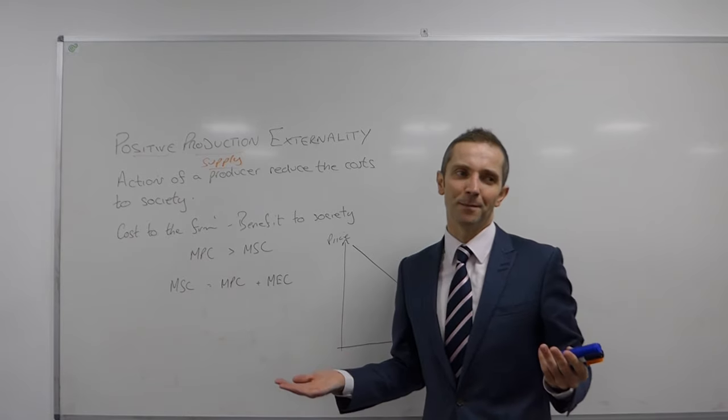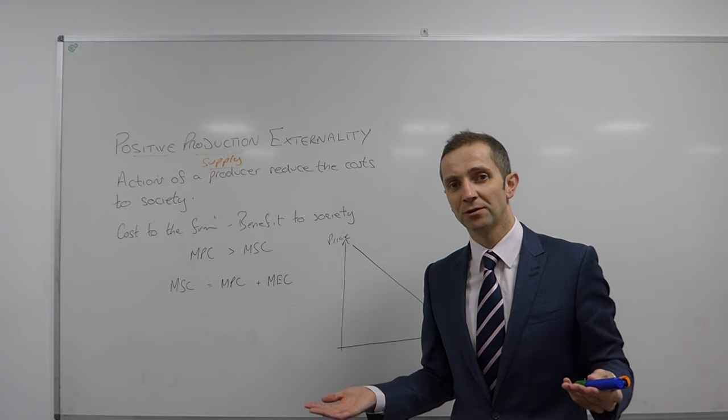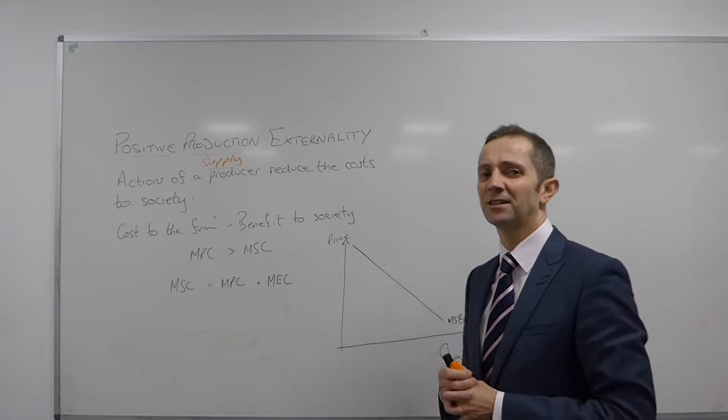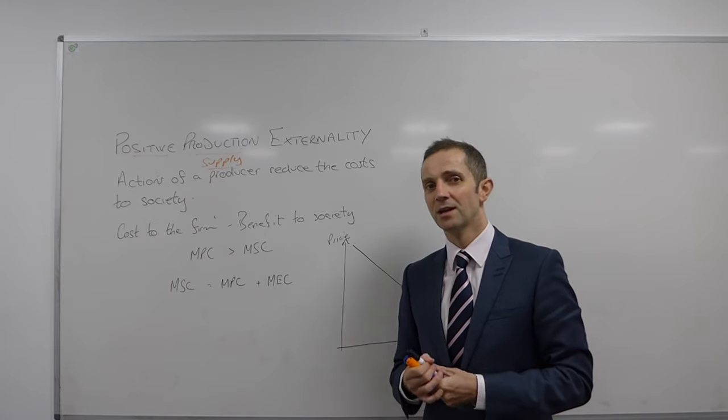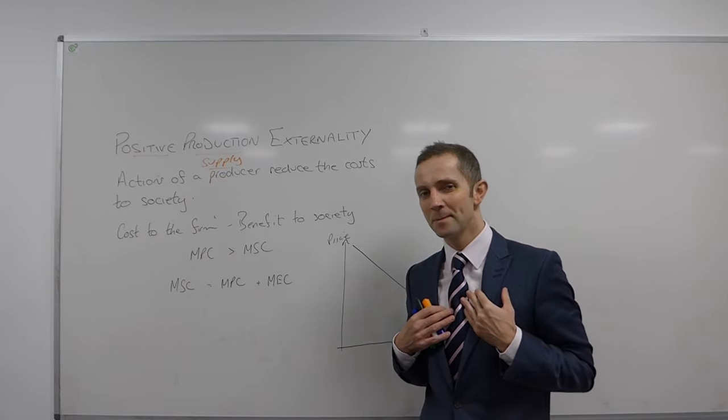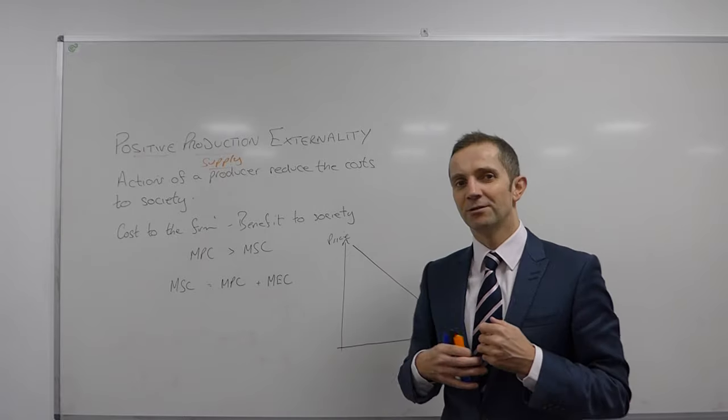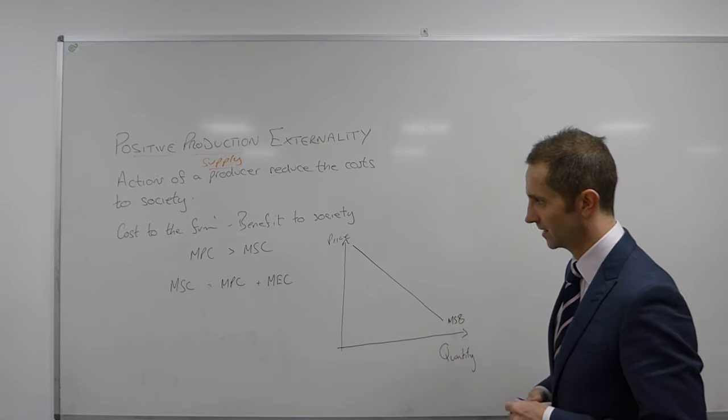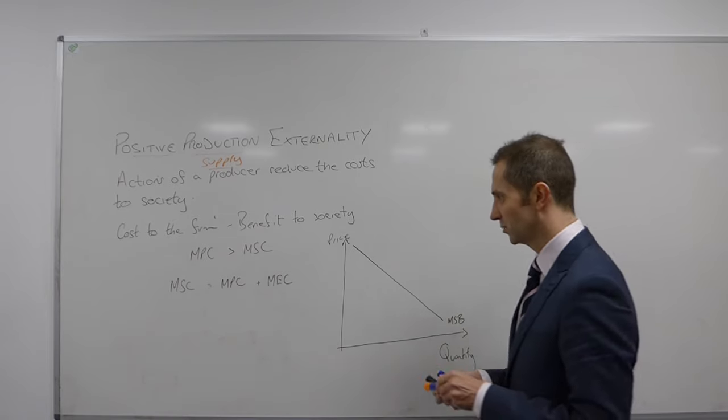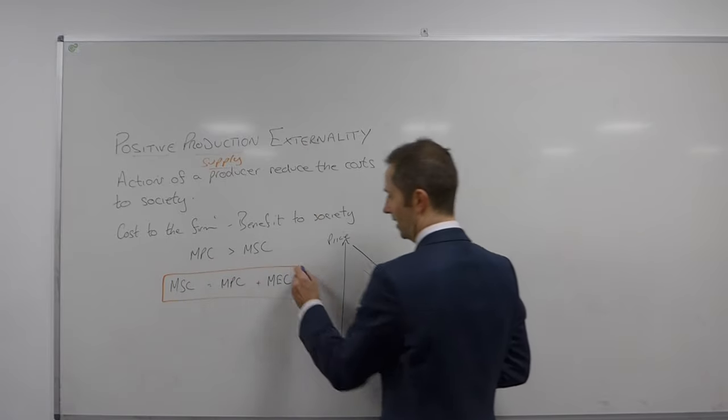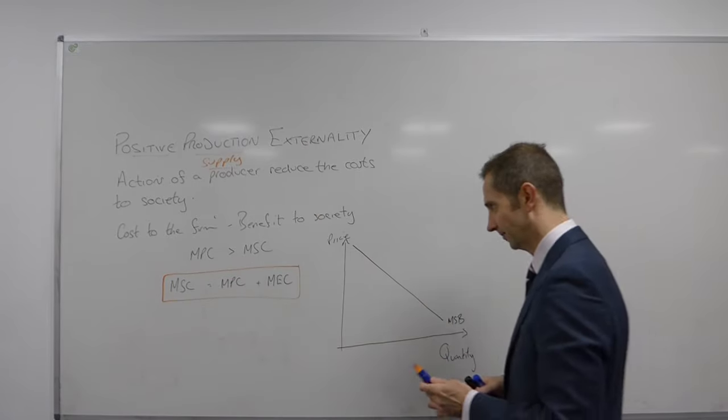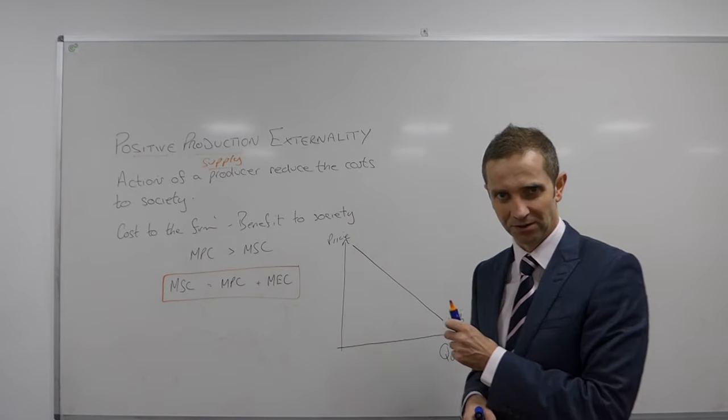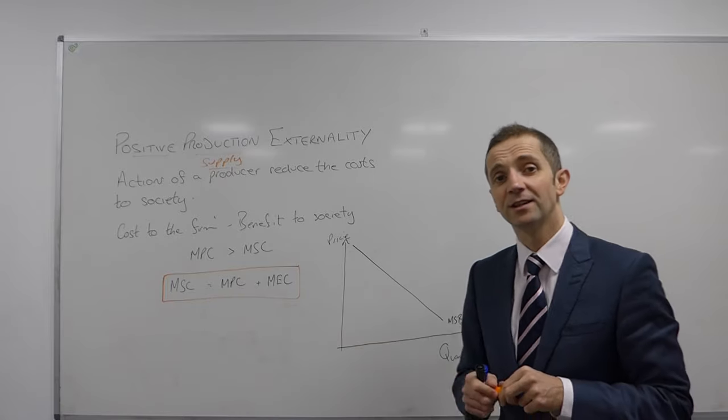You can think of it, for example, car manufacturers, the addition of catalytic converters to cars. As catalytic converters are added to cars, that's obviously a cost to the private firm. However, there is a wider benefit to society because the external costs are reduced. So you'll be familiar with our equation, MSC equals MPC plus MEC. The marginal social cost is equal to the private cost plus the marginal external cost. And we'll be considering those things on this diagram.